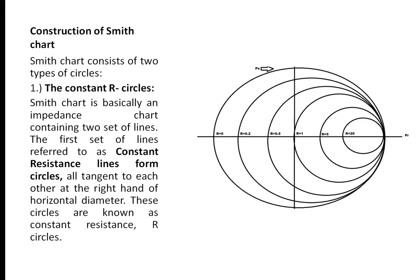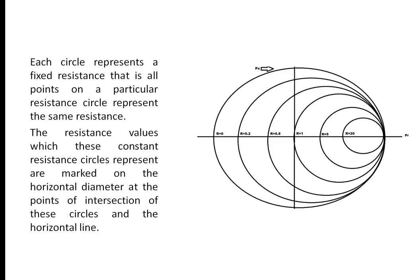Construction of Smith chart. Smith chart consists of two types of circles: the constant R circles. Smith chart is basically an impedance chart containing two sets of lines. The first set of lines, referred to as constant resistance lines, form circles all tangent to each other at the right-hand side of the horizontal diameter. These circles are known as constant resistance circles or R circles.